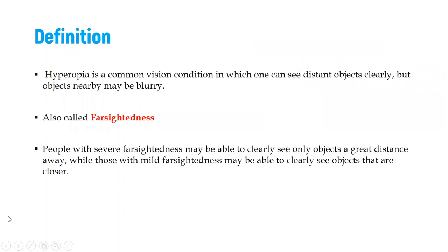Hyperopia basically is a condition where one sees distant objects very well, but when the objects are nearby or they go closer to the objects, it becomes a bit blurry. So that's why it's actually called farsightedness. So normally people with this condition will be able to see objects at a great distance, while those who have some mild form of it may be able to clearly see objects that are closer.